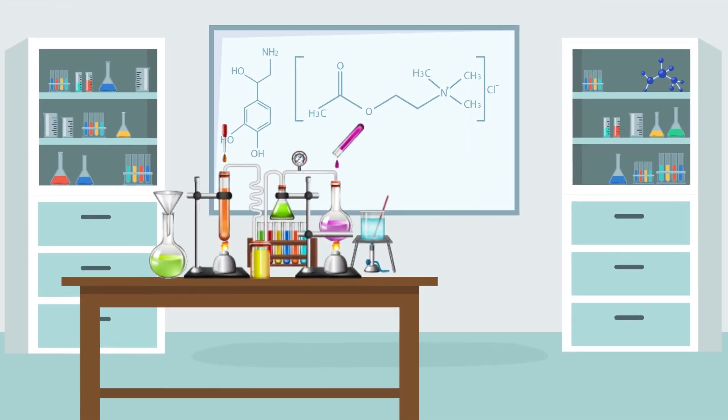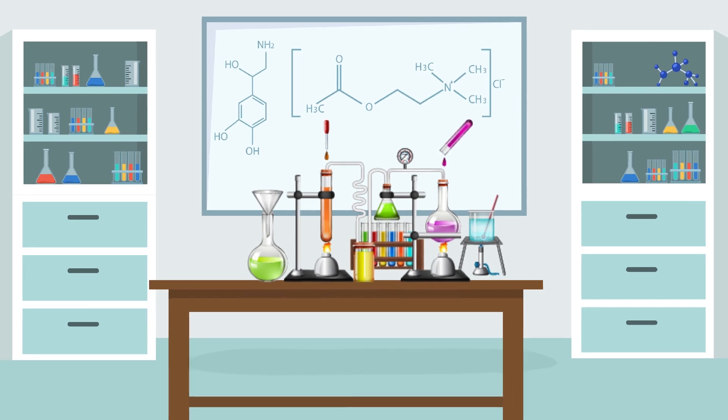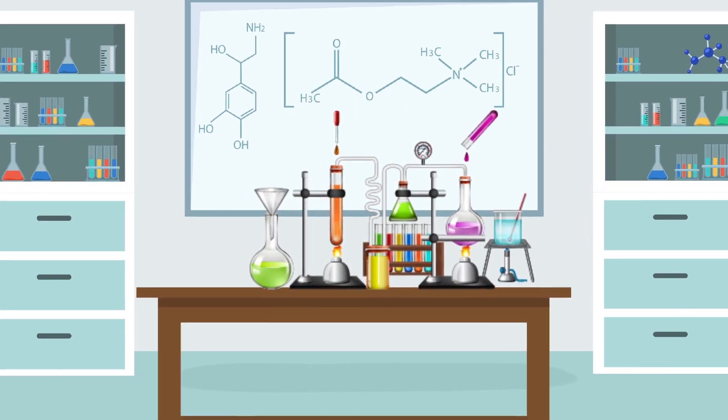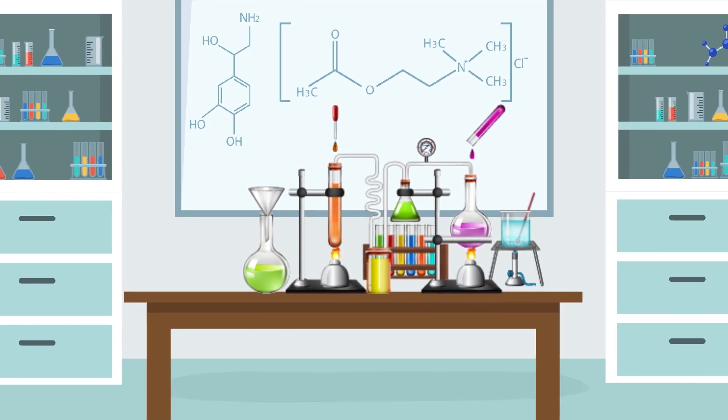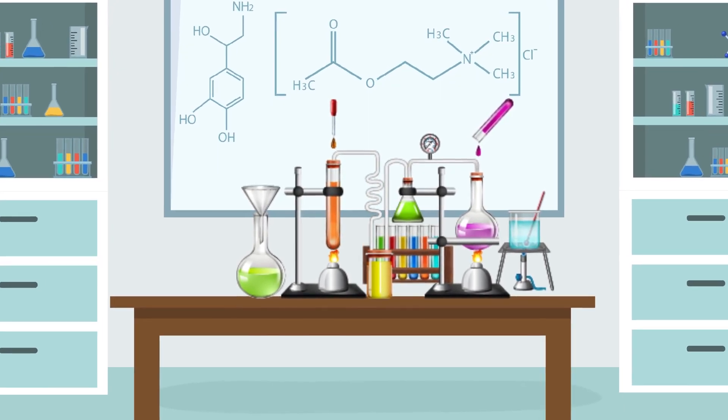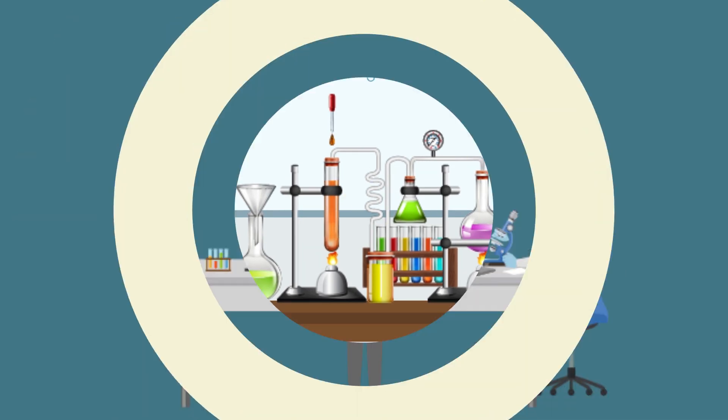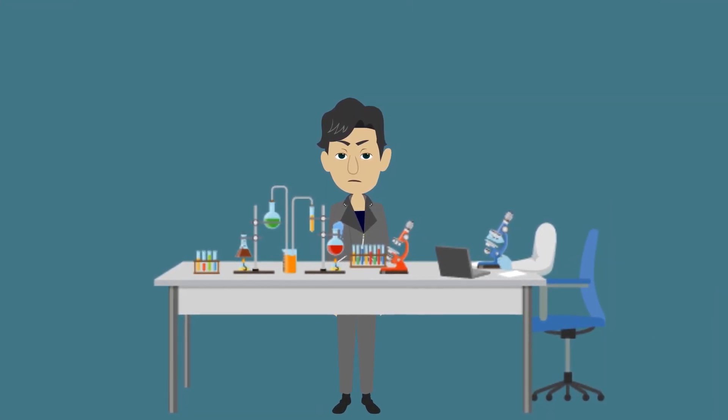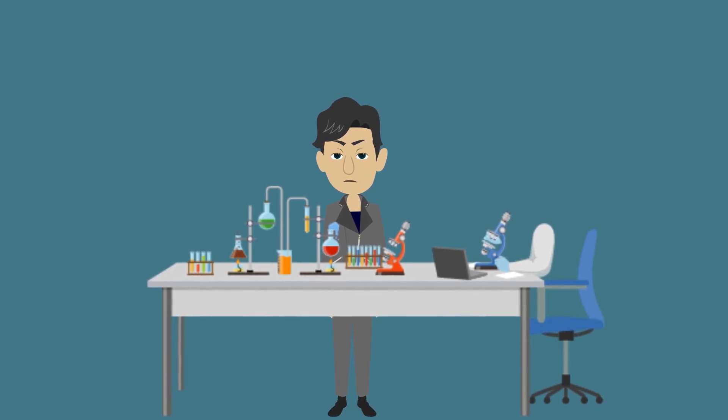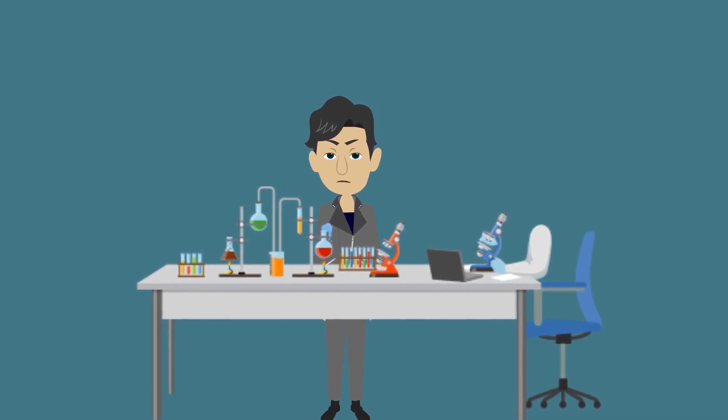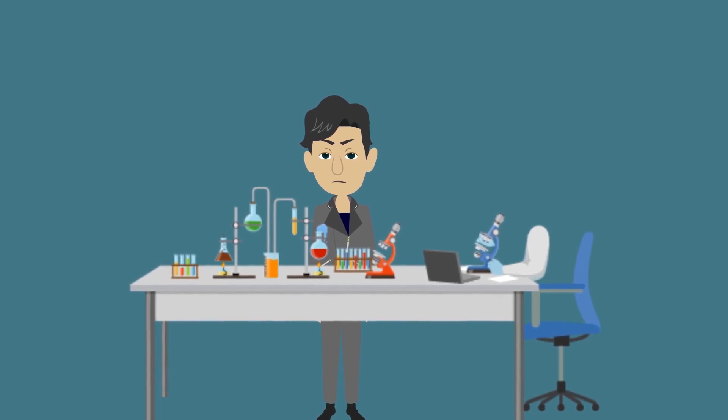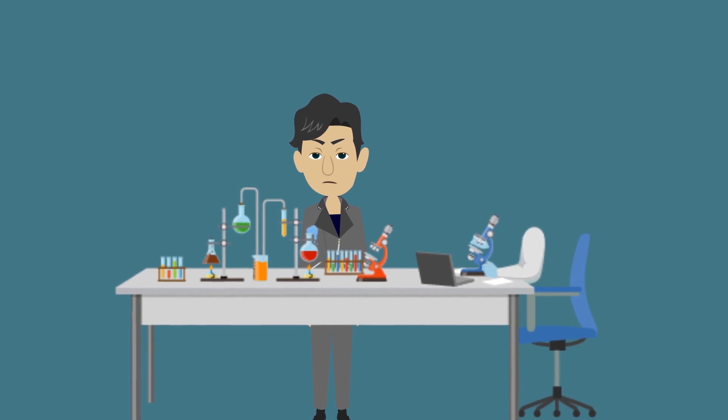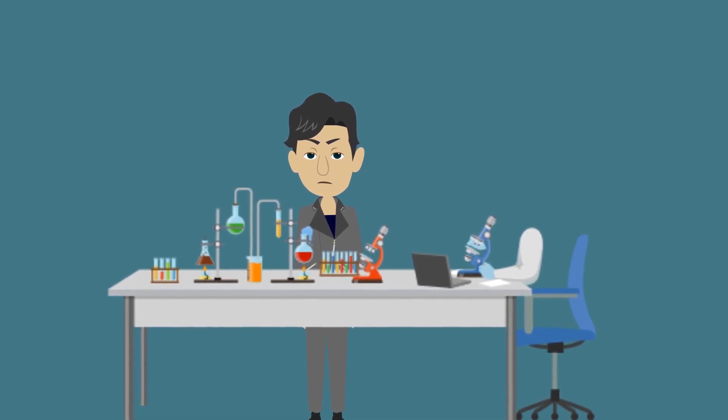He was reportedly the first scientist to discover that elements can also exist in the forms of molecules and not always as individual atoms. He also proposed a constant, which was named after him, the Avogadro constant, which is the number of constituent particles, usually atoms or molecules, that are contained in the amount of substance given by one mole. The constant was experimentally determined to be 6.023 x 10^23 molecules per gram mole.